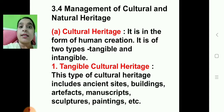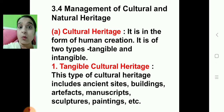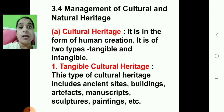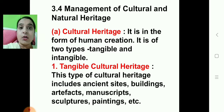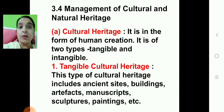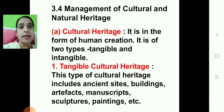Tangible cultural heritage includes ancient sites — for example, you have learnt about the Harappan civilization, Mohenjo-daro. Buildings and monuments like the Taj Mahal. Artifacts — in the Harappan civilization you have learnt about the seals. Then manuscripts, sculptures, paintings. For example, the Mona Lisa and the Starry Night painting. These are all examples of tangible cultural heritage.